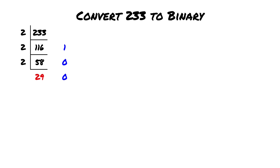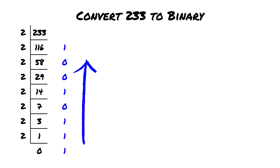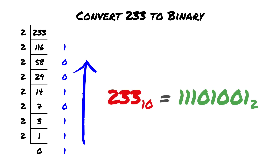29 divided by 2 is 14 remainder 1. 14 divided by 2 is 7 remainder 0. 7 divided by 2 is 3 remainder 1. 3 divided by 2 is 1 remainder 1. And 1 divided by 2 is 0 remainder 1. Reading the remainders from bottom to top, the binary representation of 233 is 11101001.